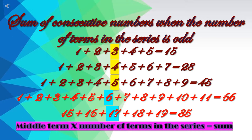Children, you can check the sum: 1 plus 2 plus 3 plus 4 plus 5 plus 6 plus 7 plus 8 plus 9 equals 45. Next, I have taken 11 numbers starting from 1, and the middle term here is 6, so 6 multiplied by 11 is 66.